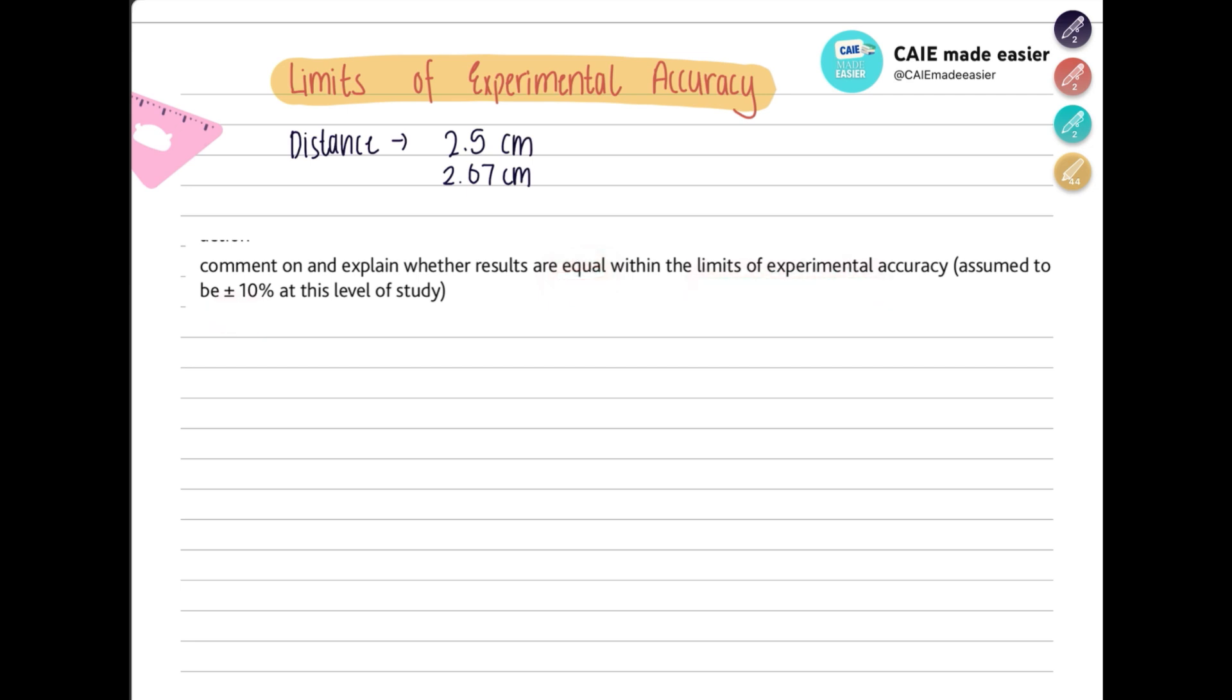For example, if you did an experiment and you got your value as 2.5, then you repeated your experiment but this time you're getting 2.67 centimeters. So does that mean are these values equal or not? They are saying it is equal.